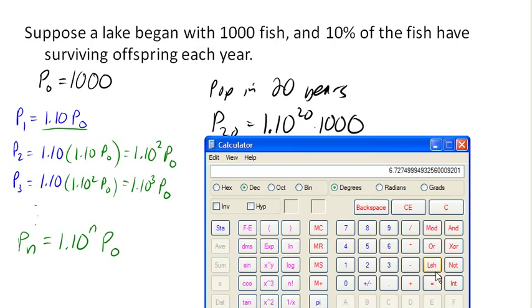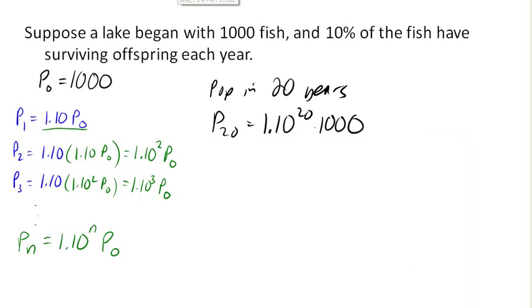And now I'm going to multiply that by my P0 by my 1,000 gives me 6727 as my prediction. So that's 6727 approximately as the prediction for the population in 20 years using this exponential growth model.